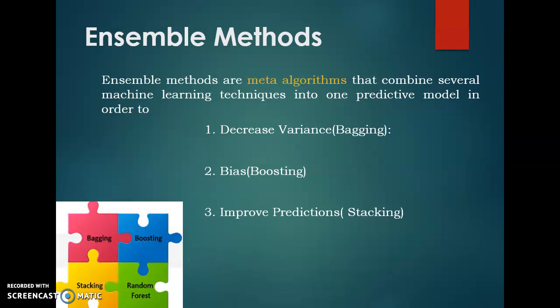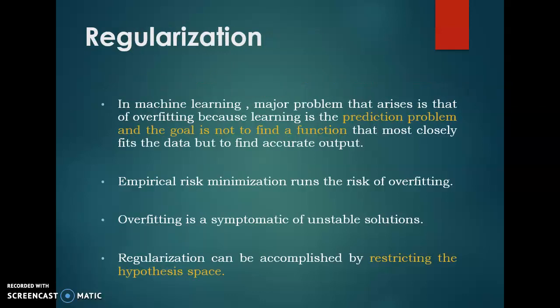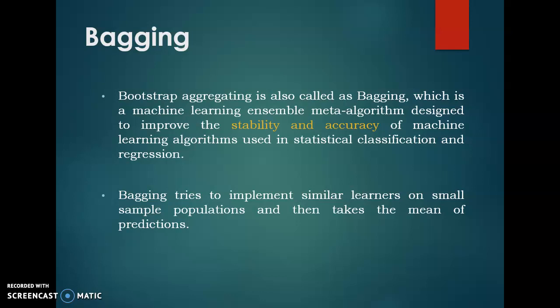In this section we will see ensemble methods. Ensemble methods are also called meta-algorithms, which combine several machine learning techniques into one predictive model. By combining various machine learning techniques, we design a particular model in order to decrease the variance — which is called bagging — decrease the bias — which is called boosting — and for improving the predictions — which is called stacking.